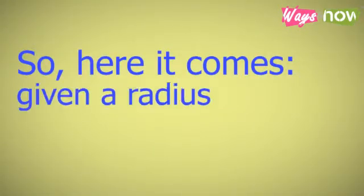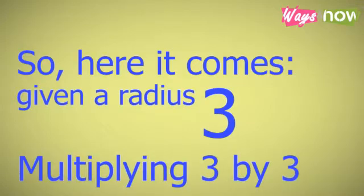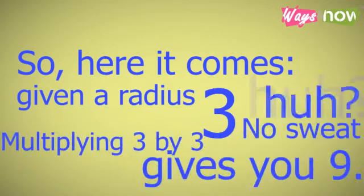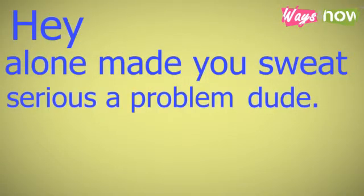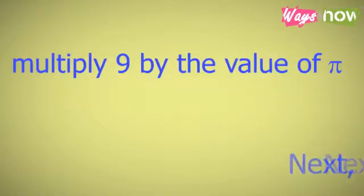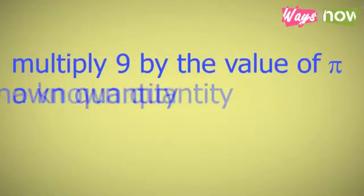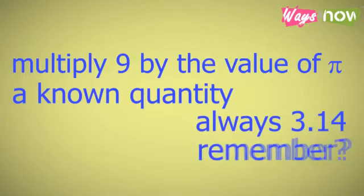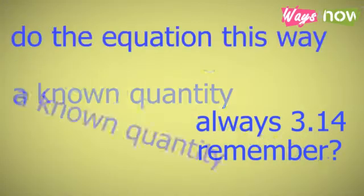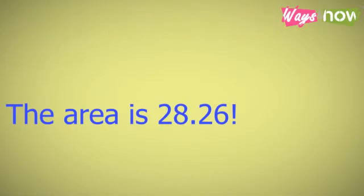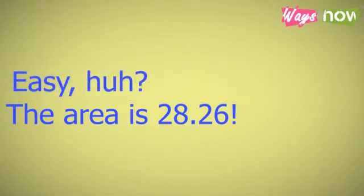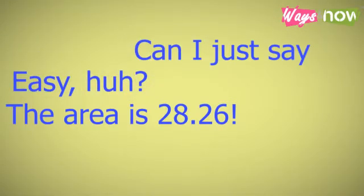So here it comes — say you're given a radius of three. Multiplying three by three gives you nine. Next, multiply nine by the value of pi, a known quantity, always 3.14. Or you could do the equation this way: area equals 3.14 times three times three. The area is 28.26. Easy, huh?